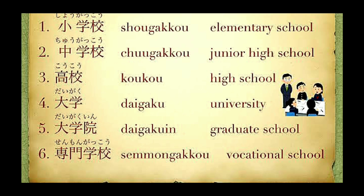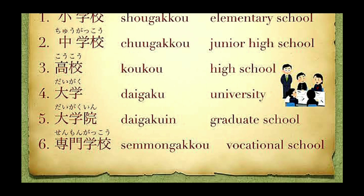Next, Koko means high school. Here is the kanji for high or expensive, and Gakko means school, so together we call it Koko — high school. Daigaku means a very big school. You can see the kanji for big or large. Daigaku means university — the big school is nothing but university.